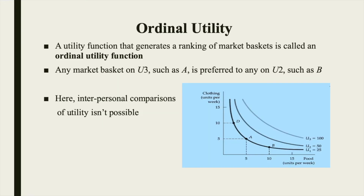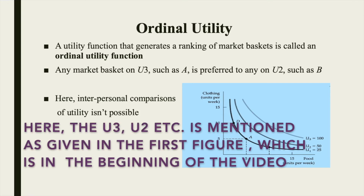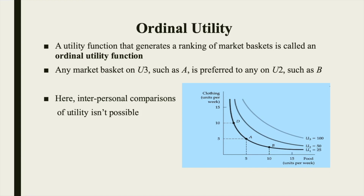With this we will move on to the ordinal utility function. A utility function that generates a ranking of market baskets is called an ordinal utility function; however it does not indicate by how much one is preferred to another. The ordinal utility function generates a ranking of market baskets in order of most to least preferred. We saw that any market basket on U3 such as A is preferred to any on U2 such as B, but the amount by which A is preferred to B, and B to D, is not revealed by the indifference map. The numerical values given in the utility functions are arbitrary and cannot be used for interpersonal comparisons.